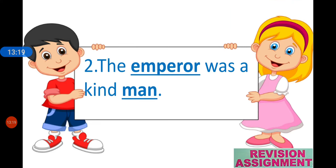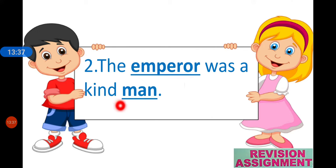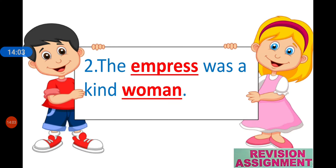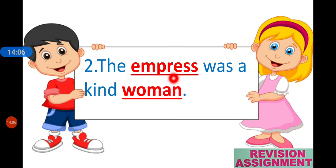Next question: 'The emperor was a kind man.' Emperor means king. The opposite gender of emperor is empress — we add -ess. And man, very easy, becomes woman. So the answer is: 'The empress was a kind woman.'